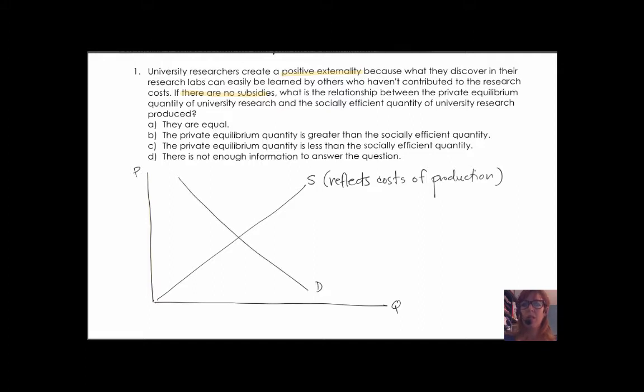That can help you with your production externalities questions. Here we have a consumption externalities problem. We have the benefits are mistakenly understated. So we're going to be looking at the demand curve, which reflects the benefits of the good. In the absence of any government action, the free market will come to its market equilibrium at the intersection of supply and demand. So the market equilibrium price and market equilibrium quantity are going to be obviously at the intersection where supply crosses demand.